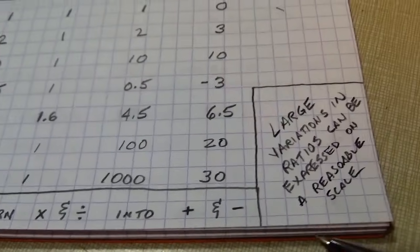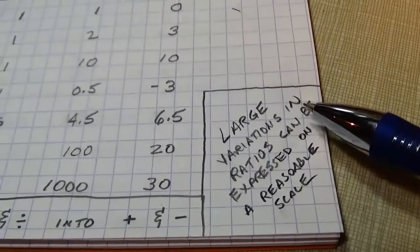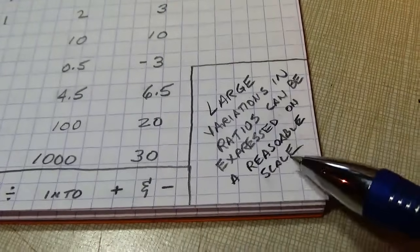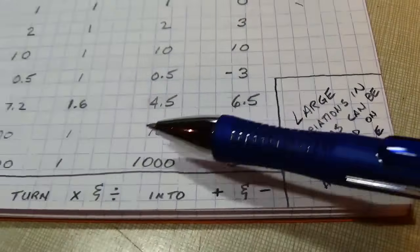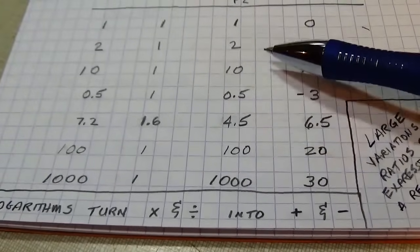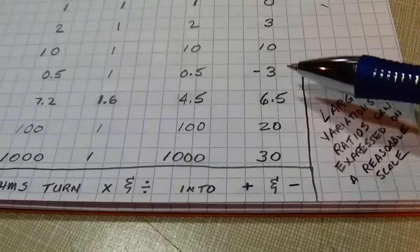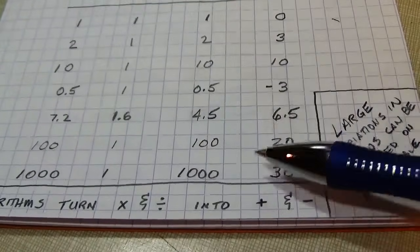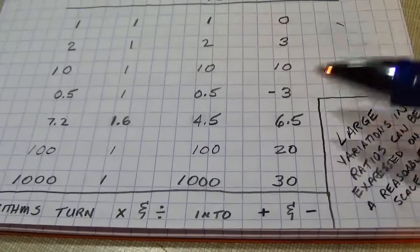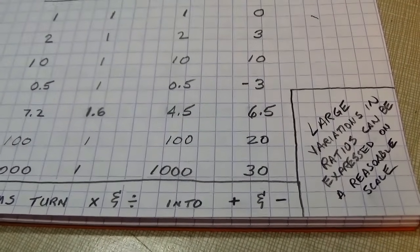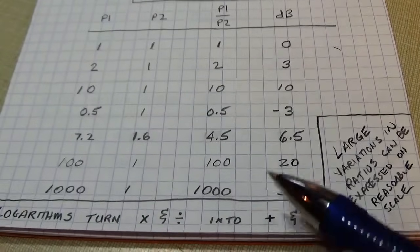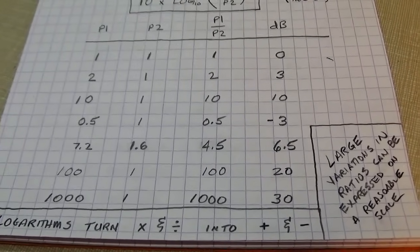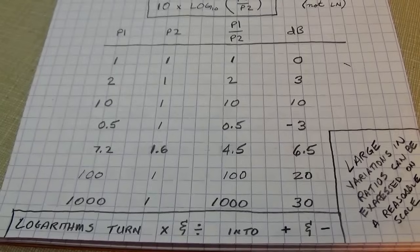Another convenient property of logarithms is that they let us express and view large variations in ratios on a reasonable scale. A ratio of 10:1 or 100:1 or even 1000:1 can all be viewed on the same scale going from zero to ten to twenty to thirty dB. We'll look at the oscilloscope in a little while and you'll see a really good example of why that matters.